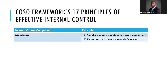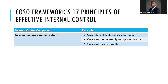Principle seventeen: evaluate and communicate deficiencies. What is the point of doing internal audit if the audit reports are not going up to the right people? What is the purpose of penetration testing if the reports are not getting to the right hands and those deficiencies are not being dealt with? Those are the 17 principles of effective internal control as briefly explained.